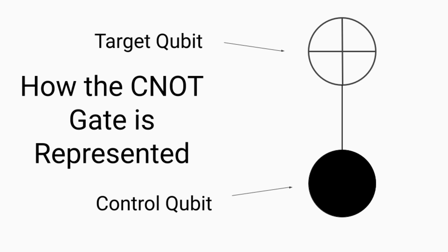So to represent the CNOT gate, we have two circles connected by a line in between them. The bottom circle, or the filled-in circle, is the control qubit. The control qubit is not necessarily always on the bottom and can be on the top as well. However, it is always the filled-in circle. The target qubit is a circle with a plus sign in the middle, and these two circles are connected by a line to signify how they are connected.